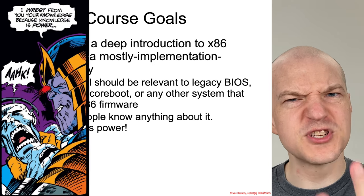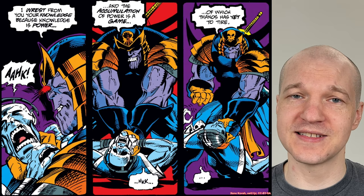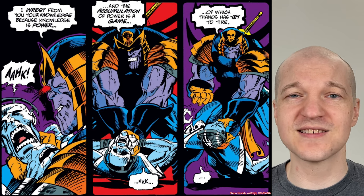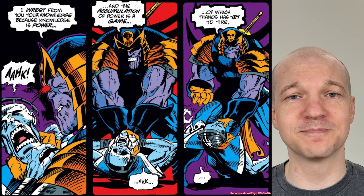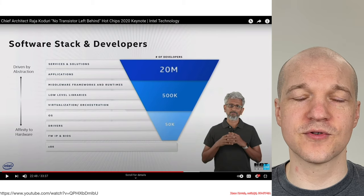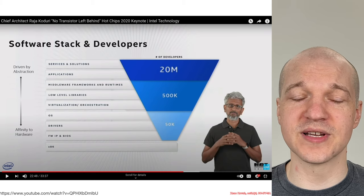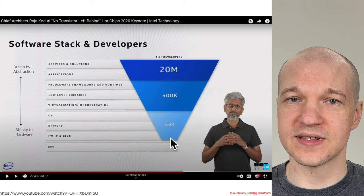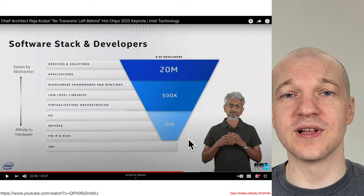Remember, knowledge is power, which you can wrest from me, because the accumulation of power is a game — a game of which Thanos has yet to tire. This is why I love the Marvel Cinematic Universe: if I had used this deep cut from some random comic book, no one would have understood me back in the day, but now you know exactly what I'm talking about. To the point that this is rare and valuable knowledge, I found a random screenshot from a previous Intel presentation that nicely summarizes the inverted pyramid associated with low-level knowledge. Lots of people know things at the high layers, but down at the lowest layers, not many people know it. By taking this class, you're acquiring a rarefied resource of knowledge that will ultimately be valuable.